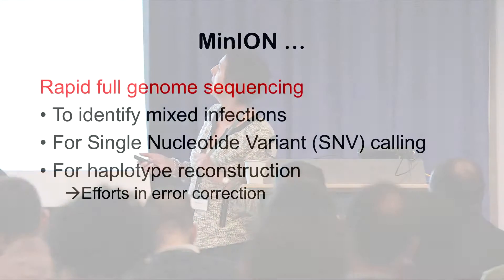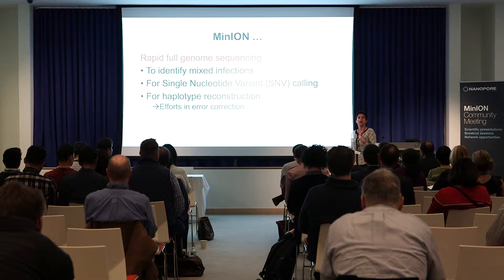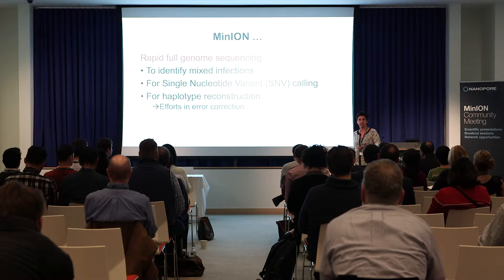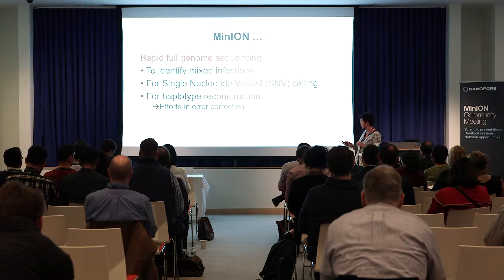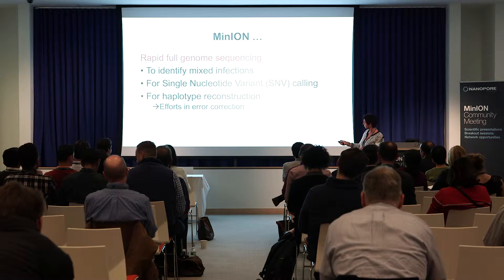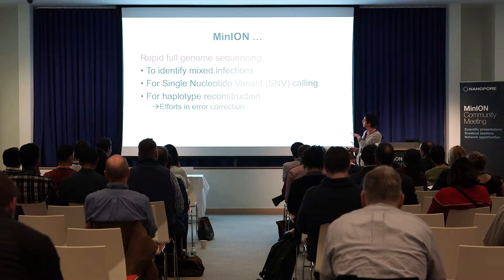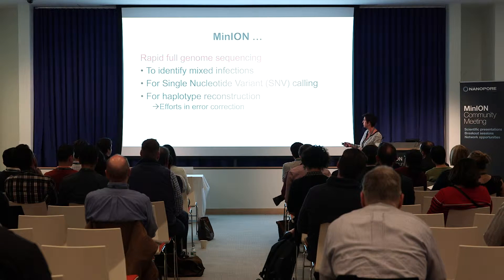Why do we want to use the MinION? Because first it's cool and it's small, but also because we want to use it in the clinic eventually — to determine what a patient is carrying during an infection, and to track an epidemic in real time for public health purposes. Specifically, we want to identify mixed infections within a patient, identify SNVs (single nucleotide variants), link patients based on what they've transmitted to each other, and do haplotype reconstruction.